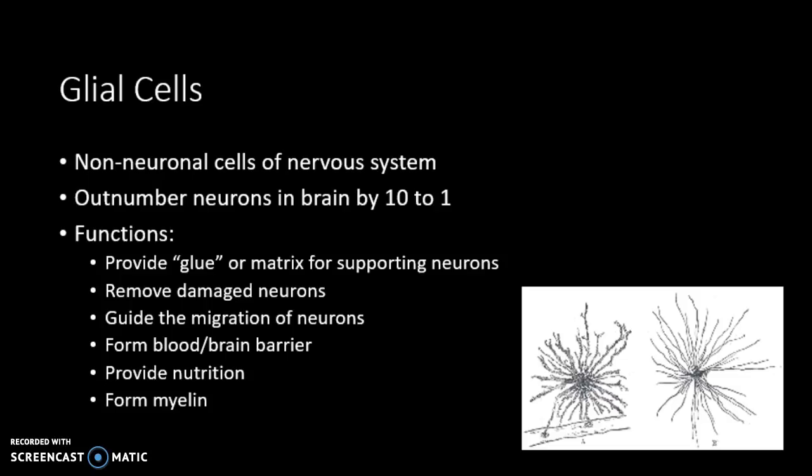We can think of glial cells like Schwann cells on an axon, in the context of motor neuron to muscle communication. Glial cells provide a glue-like matrix, remove damaged neurons, guide neuron migration, form the blood-brain barrier, and provide nutrition, as well as form myelin. About 80% of glial cells are macroglia, which includes oligodendrocytes — the CNS equivalent of Schwann cells — and astrocytes, which are supportive endothelial cells in the blood-brain barrier.